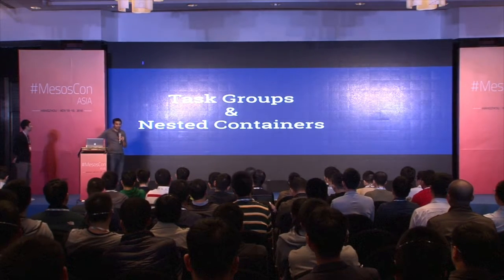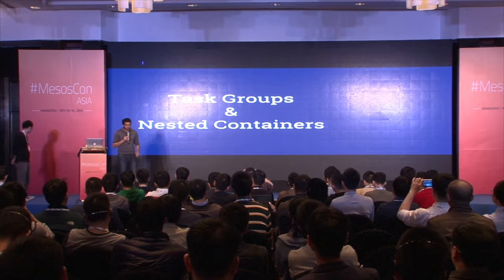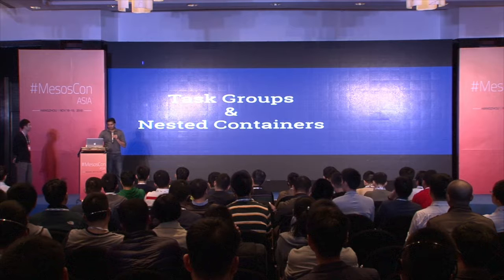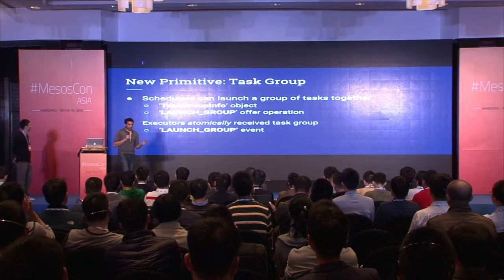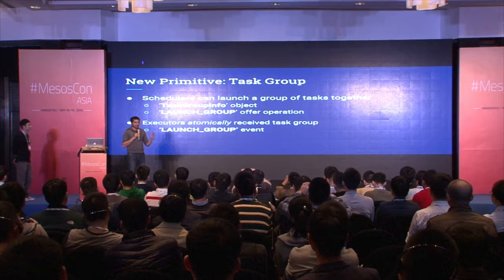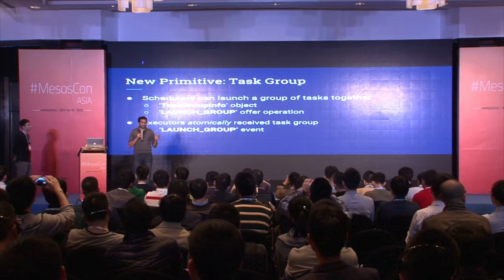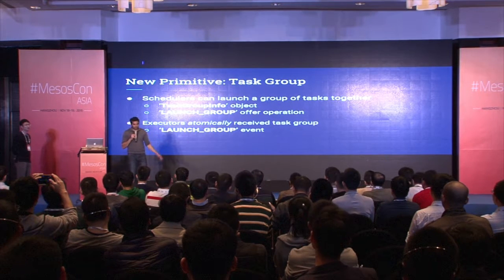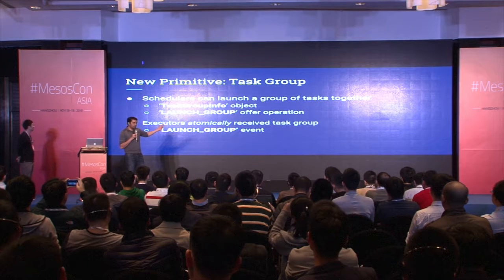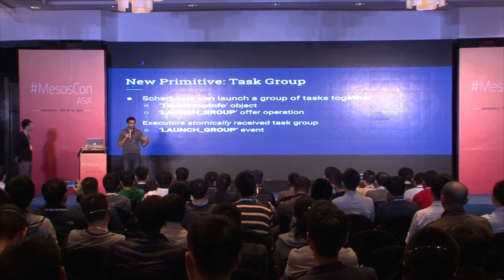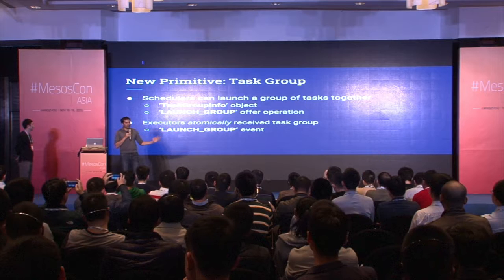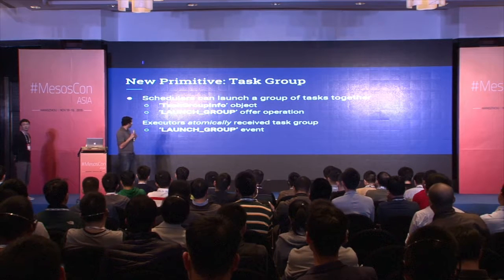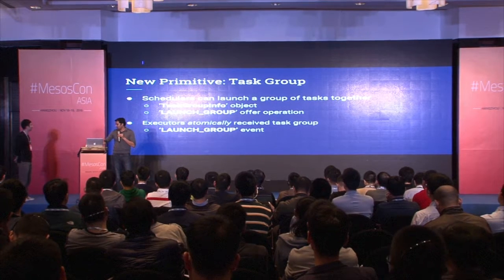So, what primitives did we come up with? There are two essential primitives designed for version 1.1: task groups and nested containers. The first primitive, task group, is simply a collection of tasks. The key idea is that the task group is atomically delivered to the executor, and if one task gets killed, the whole task group shuts down. We added a new offer operation called launch group — much like we had launch to launch a single task, now we have launch group. On the executor side, there's a launch group event that executors can use to receive and run this group of tasks as containers.